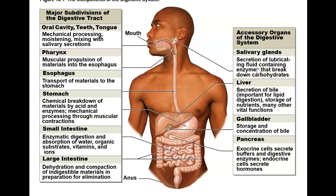Accessory organs include your salivary glands, which secrete lubricating fluid that helps break down carbohydrates. Your liver secretes bile and plays an important role in the blood supply of the digestive system. Your gallbladder stores the bile produced by the liver — bile is used to help break down fats. And your pancreas secretes enzymes into the digestive tract to aid in digestion and absorption of nutrients.